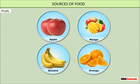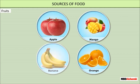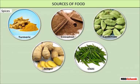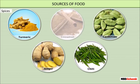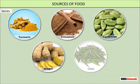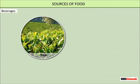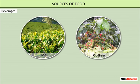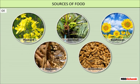Plants give us a variety of delicious and nutritious fruits. Some commonly eaten fruits are apple, mango, banana, orange, etc. Plants also give us many spices such as turmeric, cinnamon, cardamom, ginger, and chili.